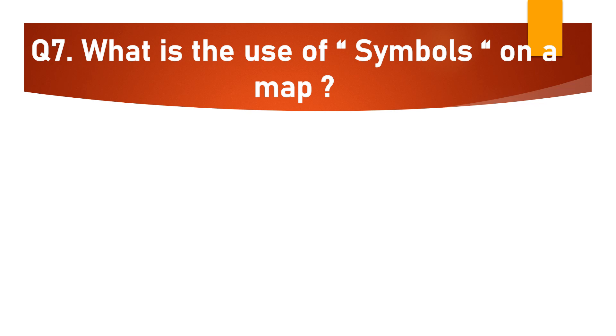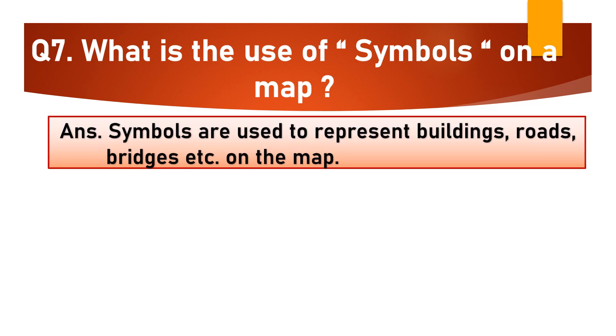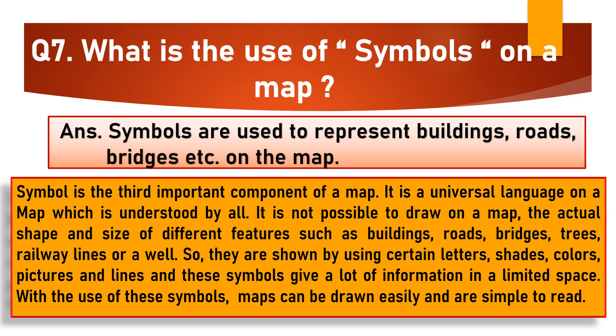Question No. 7: What is the use of symbols on a map? Symbols are used to represent buildings, roads, bridges, etc. on the map. Symbol is the third important component of a map and is a universal language understood by all. It is not possible to draw the actual shape and size of different features such as buildings, roads, bridges, trees, railway lines or a well, so they are shown by using certain letters, shades, colors, pictures and lines. These symbols give a lot of information in a limited space, and with their use, maps can be drawn easily and are simple to read.